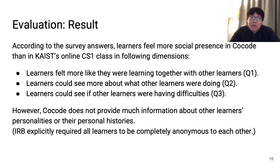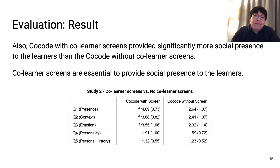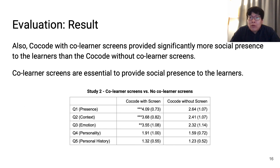However, CoreCode could not provide much information about other learners' personalities or personal histories, partially because the IRB required that all learners be completely anonymous to each other, making it hard to learn personalities or personal histories of others. Another finding is that CoreCode with co-learner screens provided significantly more social presence than CoreCode without co-learner screens, showing that co-learner screens are essential to providing social presence.